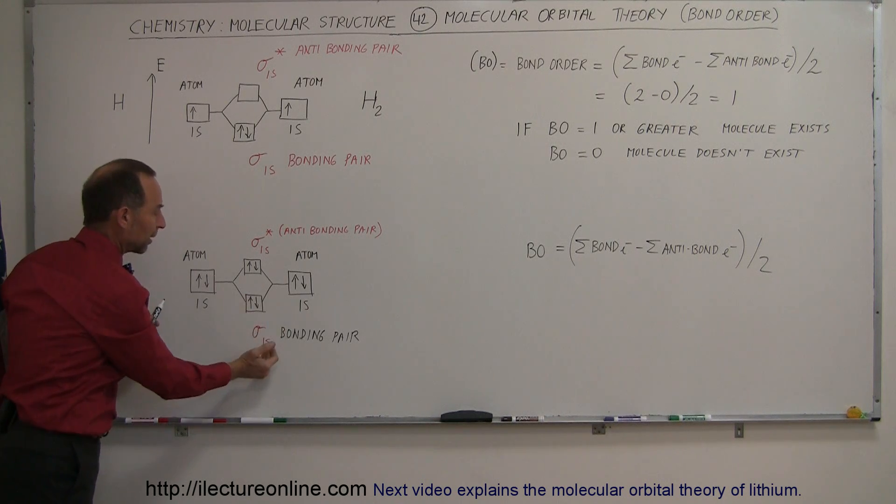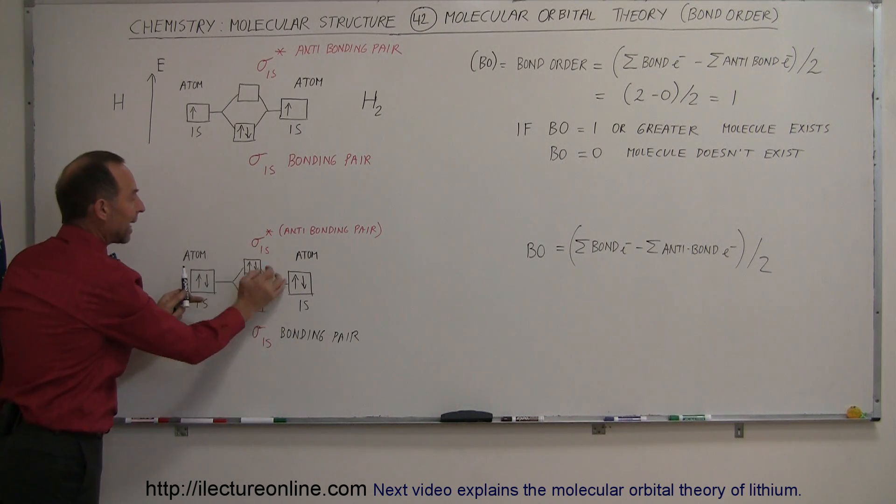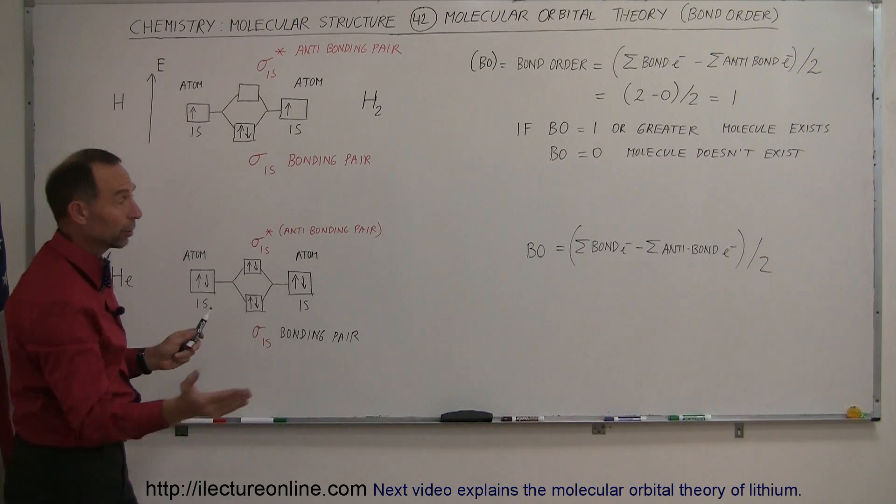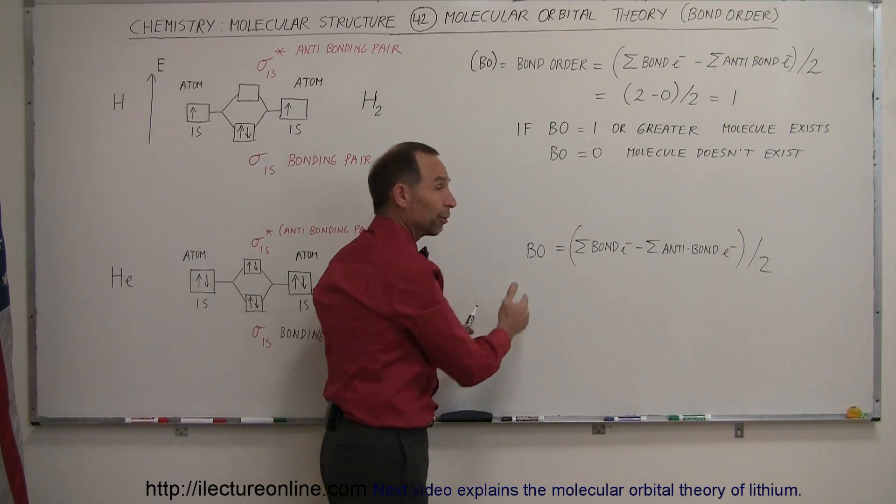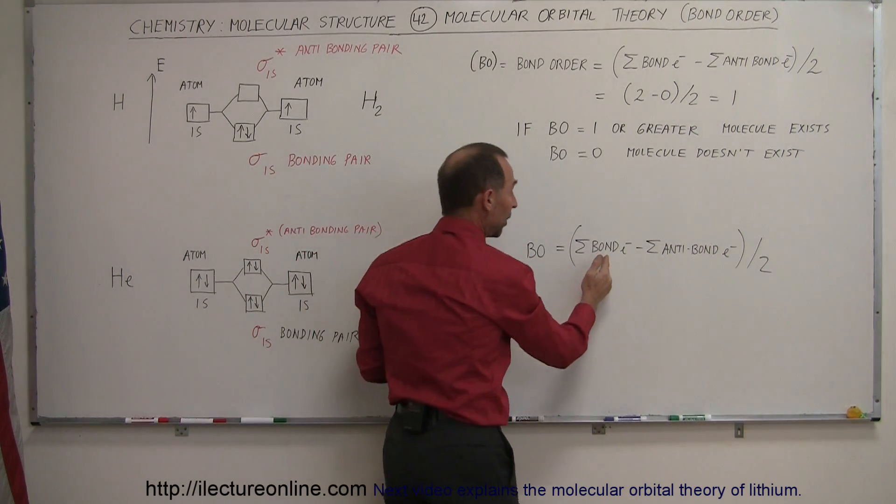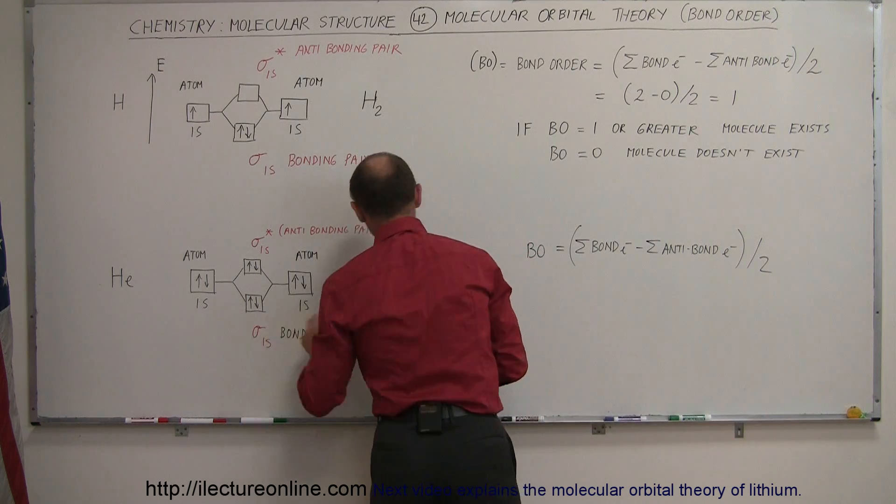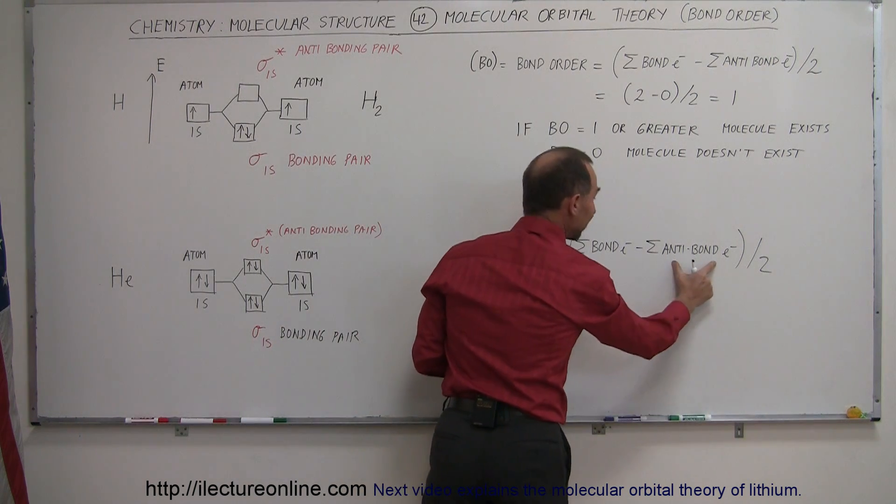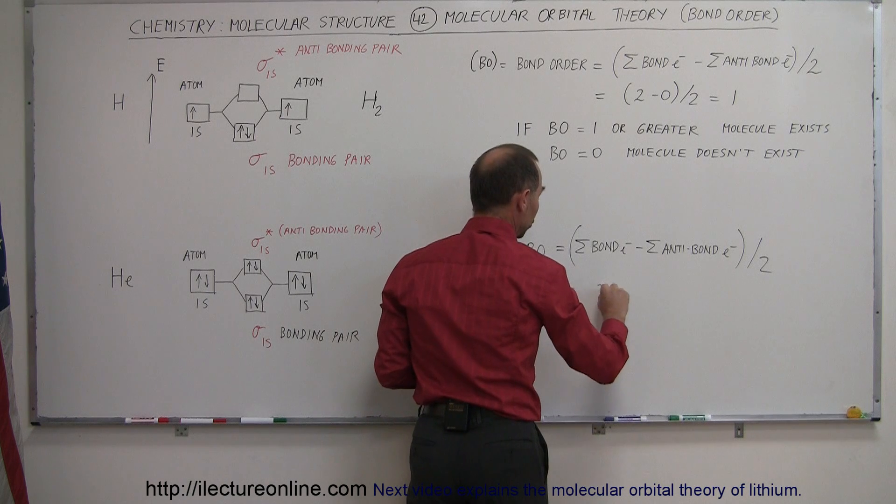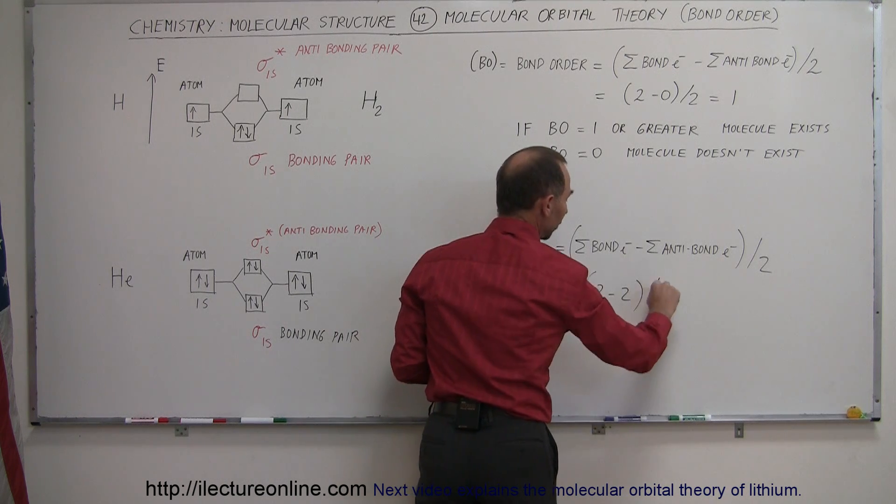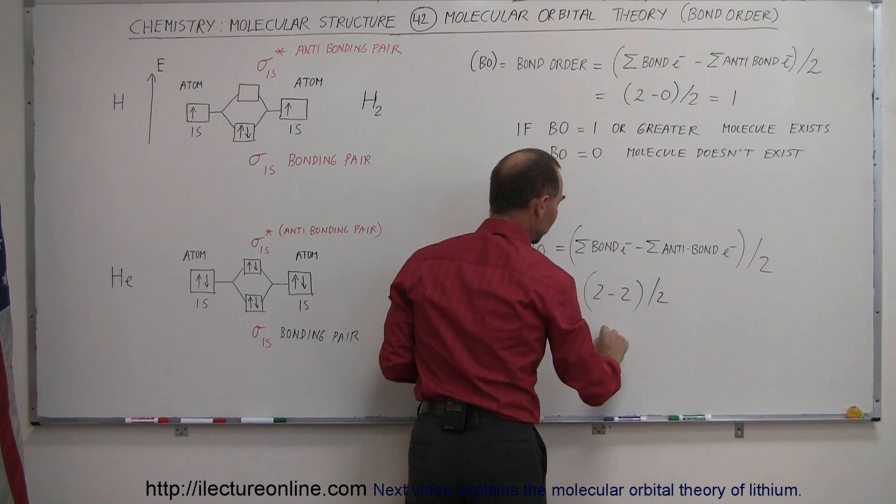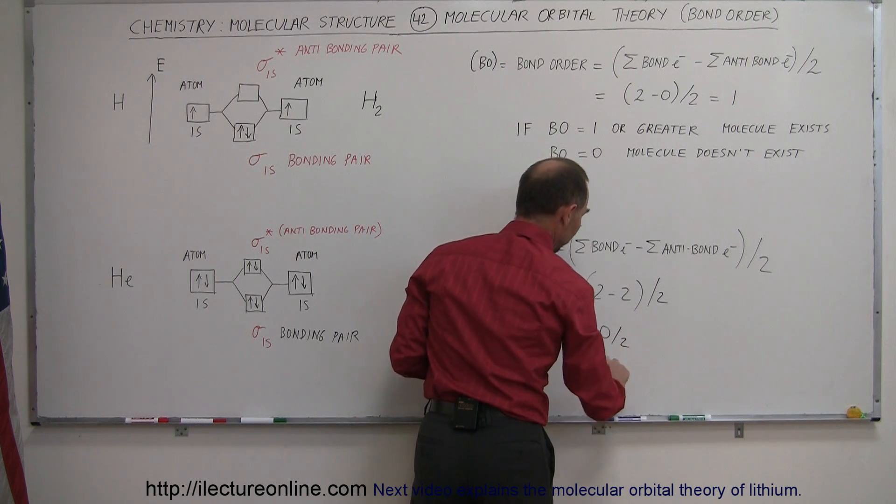So the first two electrons form a bonding pair, the next two electrons form an anti-bonding pair. When we take a look at the equation, what is the bond order for helium? We add up all the bond electrons, which there are two, and subtract all the anti-bond electrons, which there are two, so this equals 2 minus 2. Divide the whole thing by 2, and we get 0 divided by 2, which is 0.